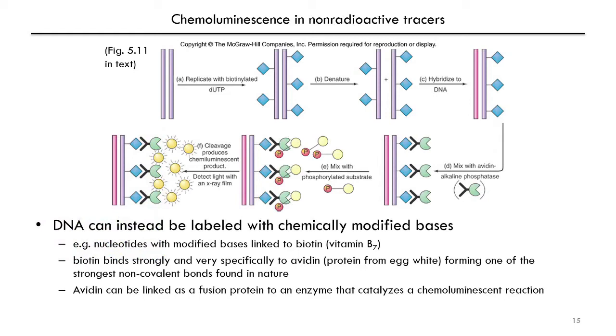In this example, the enzyme is a phosphatase, which you can use to cleave the phosphate group from a phosphorylated substrate to produce a chemiluminescent product that gives off light, which you can detect.